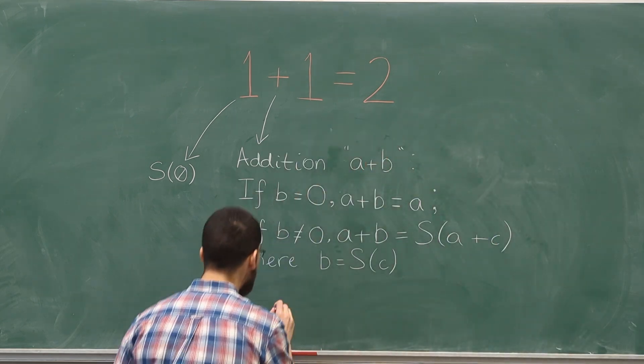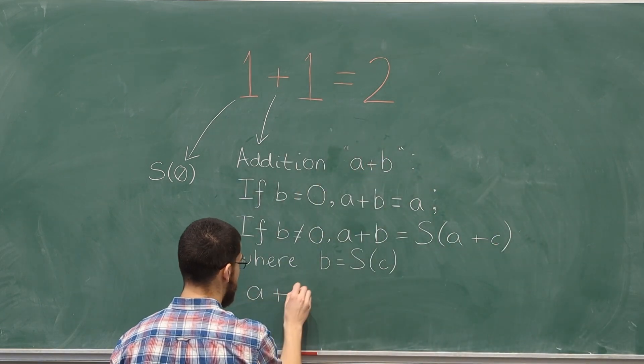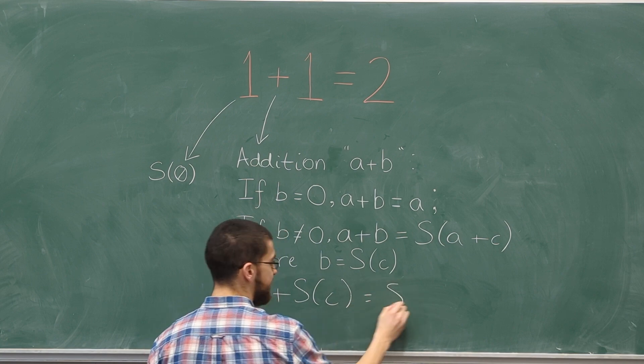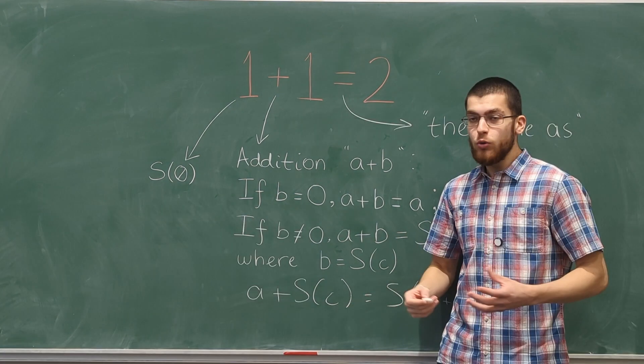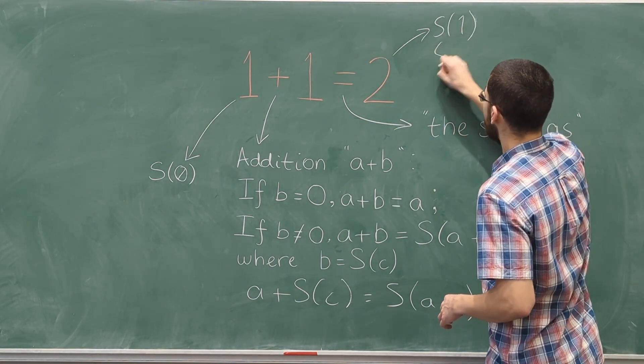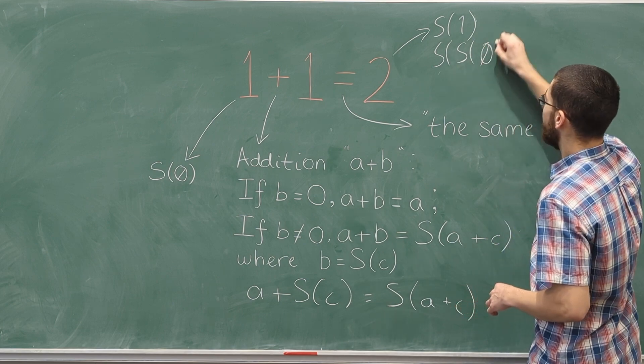All this is saying is that when you have a plus b, which is a plus the successor of c, this is the same as the successor of a plus c. Equals can simply be defined as the same as, and two is the successor of one, which is the successor of the successor of zero.